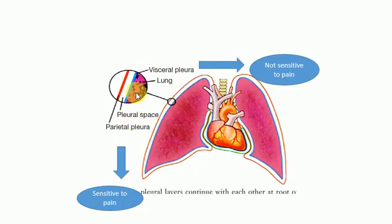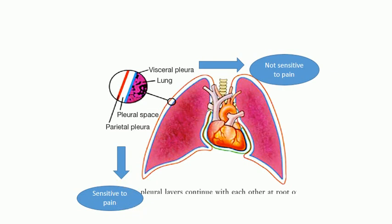This is a short diagrammatic presentation about the pleura. You can see the lungs, and once you magnify the region of interest, the outer layer is called the parietal pleura and the inner one is called the visceral pleura. The visceral pleura lines the lungs, while the parietal pleura lines the inner wall of the chest.